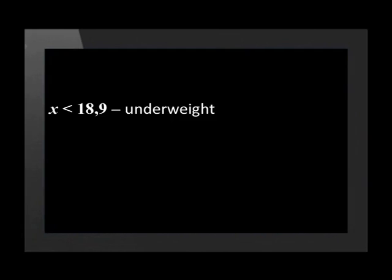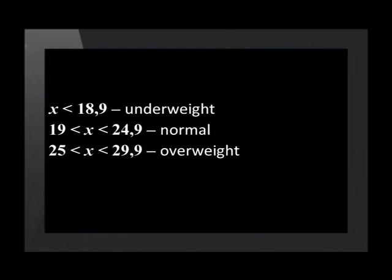This number may not mean much on its own, which is why we need to compare it to a table of norms. In adults, if a BMI reading is less than 18.9, the individual is underweight. If the BMI is between 19 and 24.9, the individual is normal weight. If the BMI is between 25 and 29.9, the individual is considered overweight. If the BMI is above 30, the individual is considered obese.